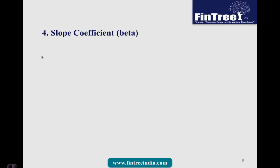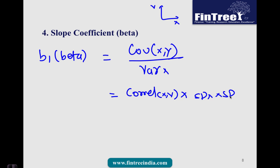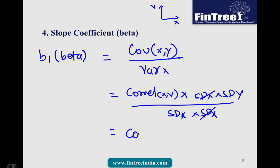Next is the slope coefficient, or beta. B1 (beta) equals the covariance between x and y divided by the variance of x, where x is the independent variable and y is the dependent variable. We also know that covariance equals correlation between x and y times the standard deviation of x times the standard deviation of y. Dividing by the variance of x gives us the alternative formula: correlation between x and y multiplied by the standard deviation of y divided by the standard deviation of x.